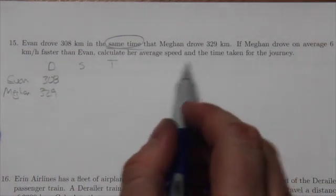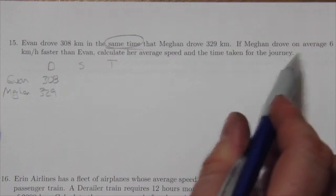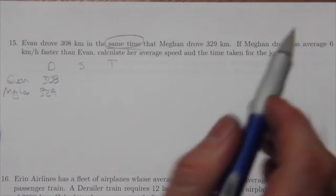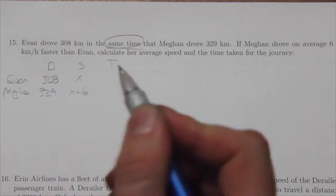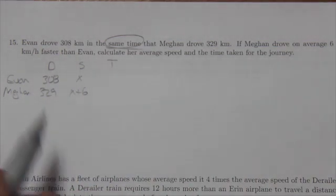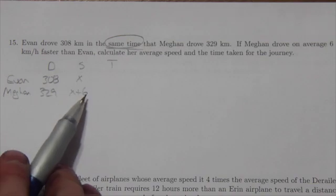Okay, speed. What do we know about the speed here? Well, Megan drove on average six kilometers an hour faster than Evan. So I don't know what Evan did but she did X plus six. So unknown for Evan but X plus six for Megan.